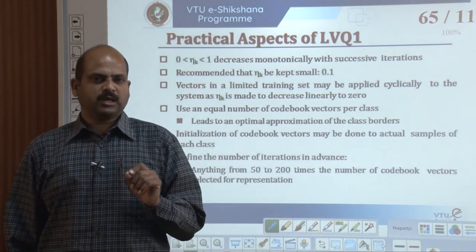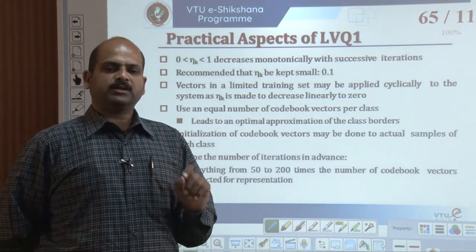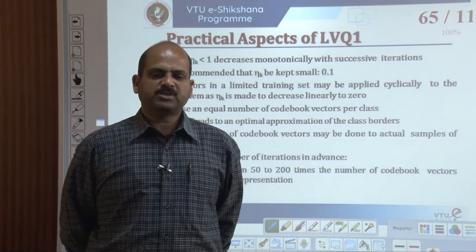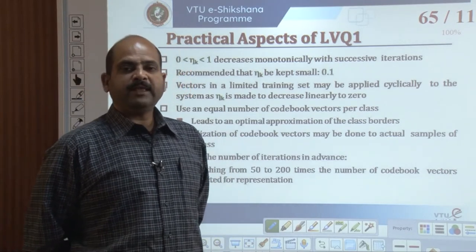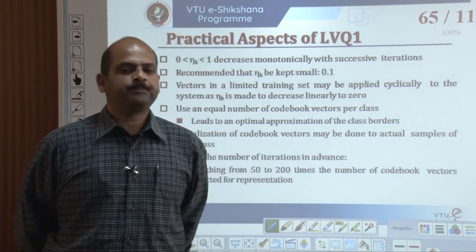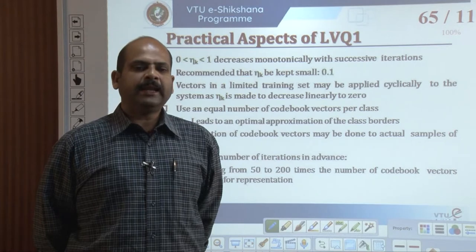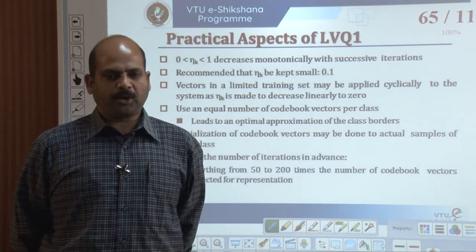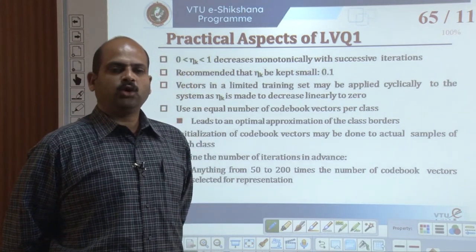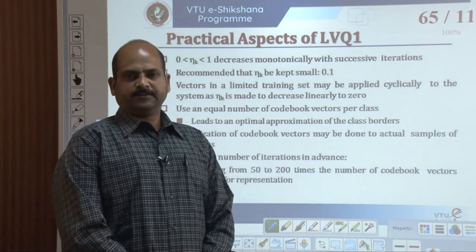The key difference is that if vectors are misclassified, the corresponding weight vectors are moved away from the present input to reduce the possibility of misclassification, rather than leaving them unchanged. Cohen suggested keeping an equal number of codebook vectors per class, which leads to an optimal approximation of the class boundaries. Initialization of codebook vectors may be done using actual samples of each class.